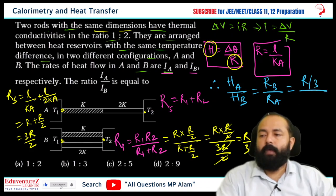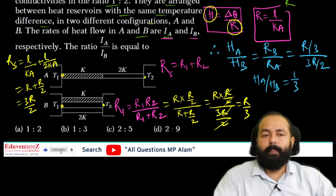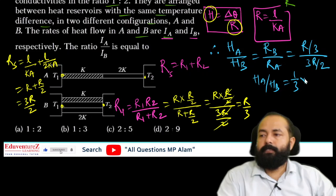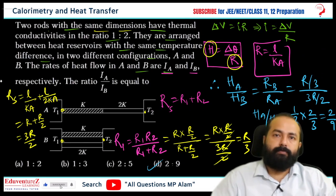So HA by HB equals - look, R will cancel, 1 by 3 and from below 2 by 3, so 2 by 9. So 2 by 9, the fourth option is correct here. Thank you so much for watching.